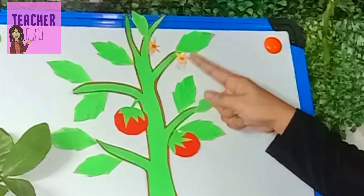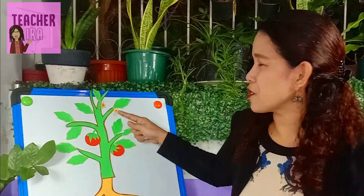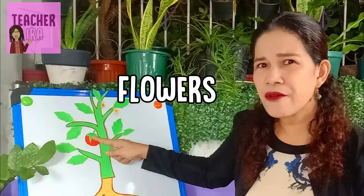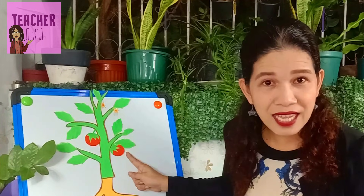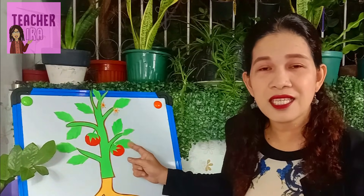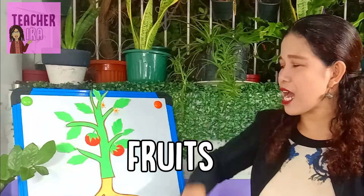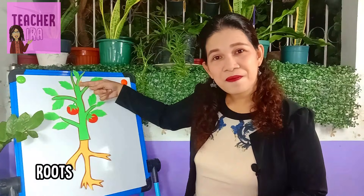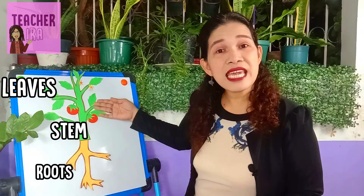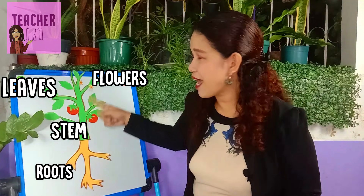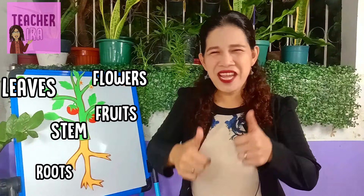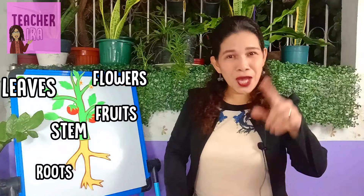How about the most beautiful part of the plant — what do you call this? Absolutely right, these are called flowers. How about the part of the plant that you can eat and has seeds inside? Yes — the fruits! One more time: roots, stem, leaves, flowers, and fruits. Great job, kids! I hope you learned something today. Hope to see you next time — thank you, children, bye!